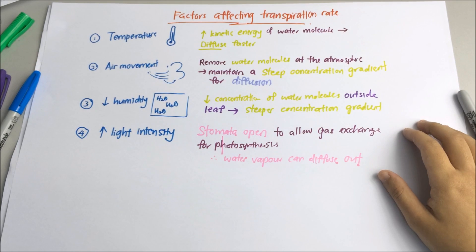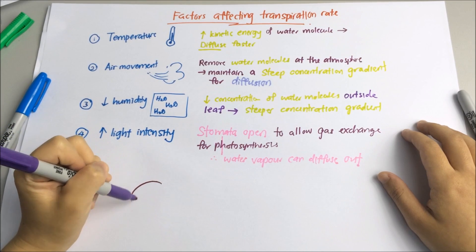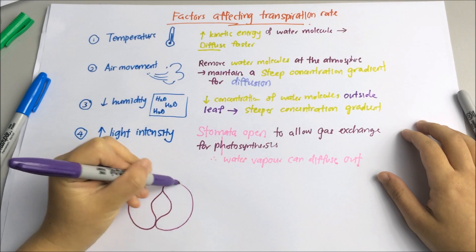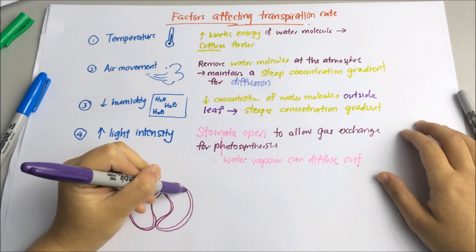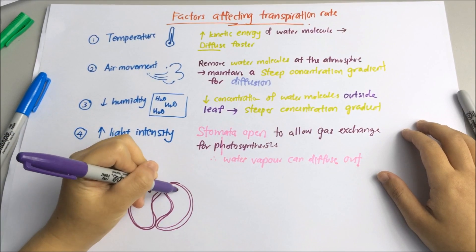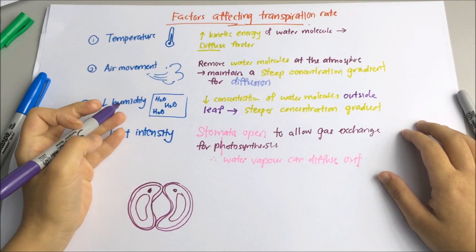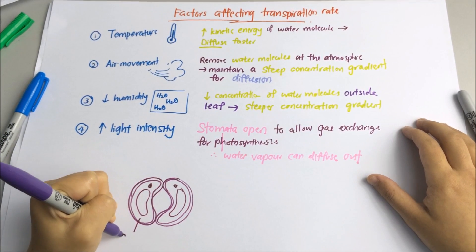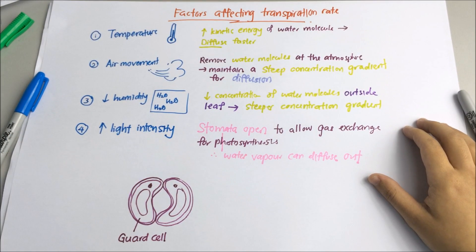Now let's talk about the mechanism of the opening of stomata. The rate of transpiration is controlled by stomata. Stomata are found usually on the lower epidermis of dicotyledonous plants. Each stomata is surrounded by two guard cells, which are shaped like kidneys — two kidneys side by side. Guard cells regulate gas exchange by opening and closing the stomata.